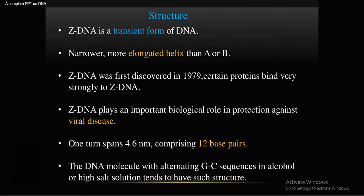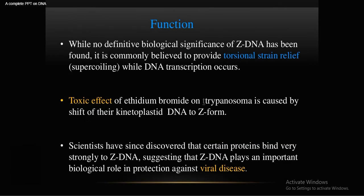Z-DNA was first discovered in 1979. Certain proteins bind very strongly to Z-DNA, and it plays a very important biological role in protecting against viral diseases. One turn spans around 4.6 nanometers comprising around 12 base pairs. DNA molecules with alternating GC sequences in alcohol or high salt solution tend to adopt this Z-DNA form.